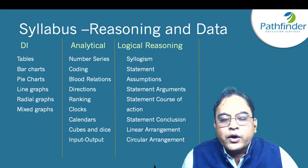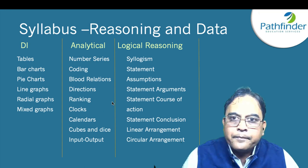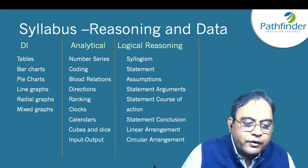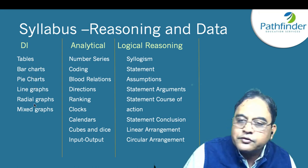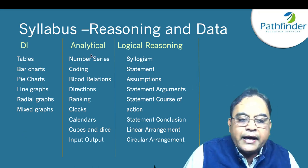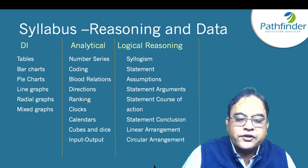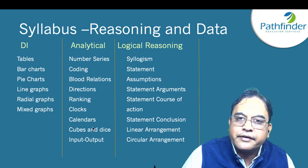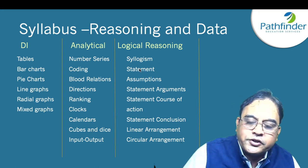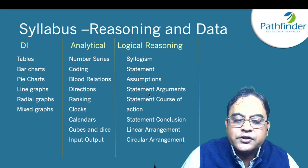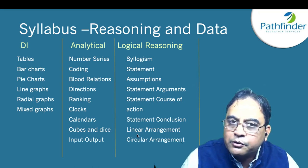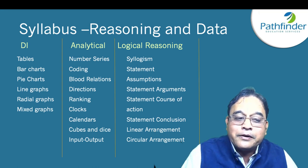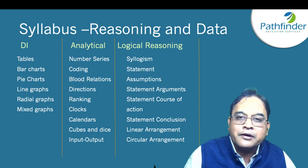Another part of the section is reasoning and data. Data interpretation includes tables, bar charts, pie charts, line graphs, radial graphs, and mixed graphs. Analytical reasoning covers number series, coding, blood relations, and direction sense — all standard topics. Logical reasoning includes syllogism, statement assumptions, statement arguments, statement course of action, statement conclusion, linear arrangement, and circular arrangement — similar to banking exam topics, which have been asked in TISnet over the last few years.